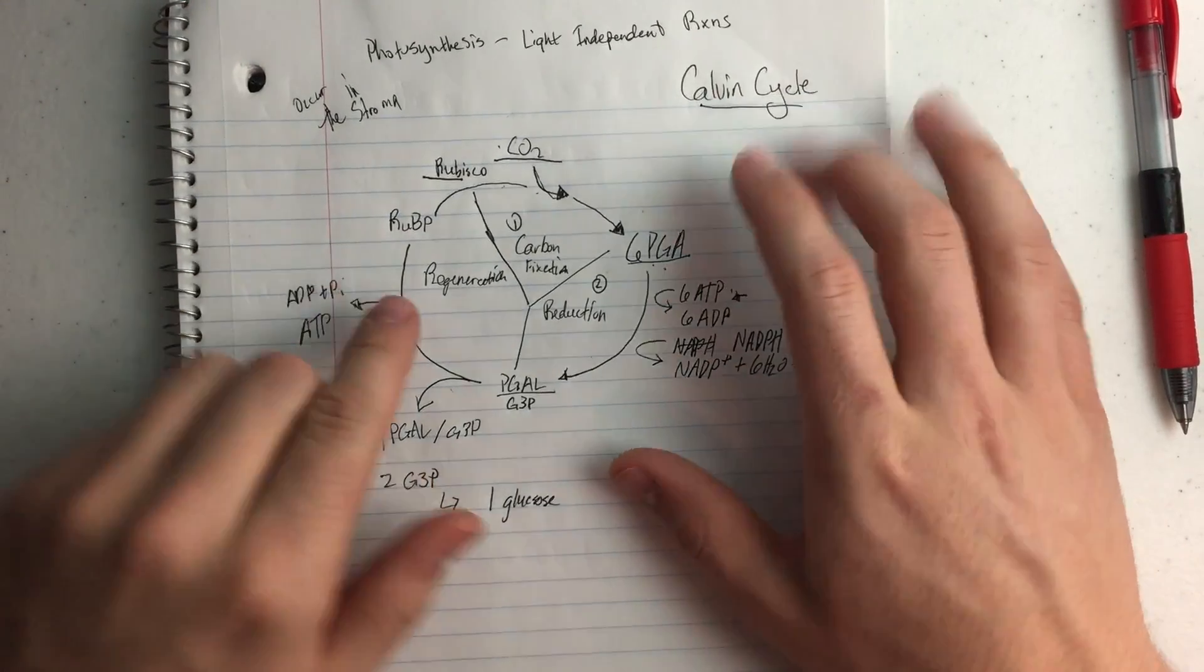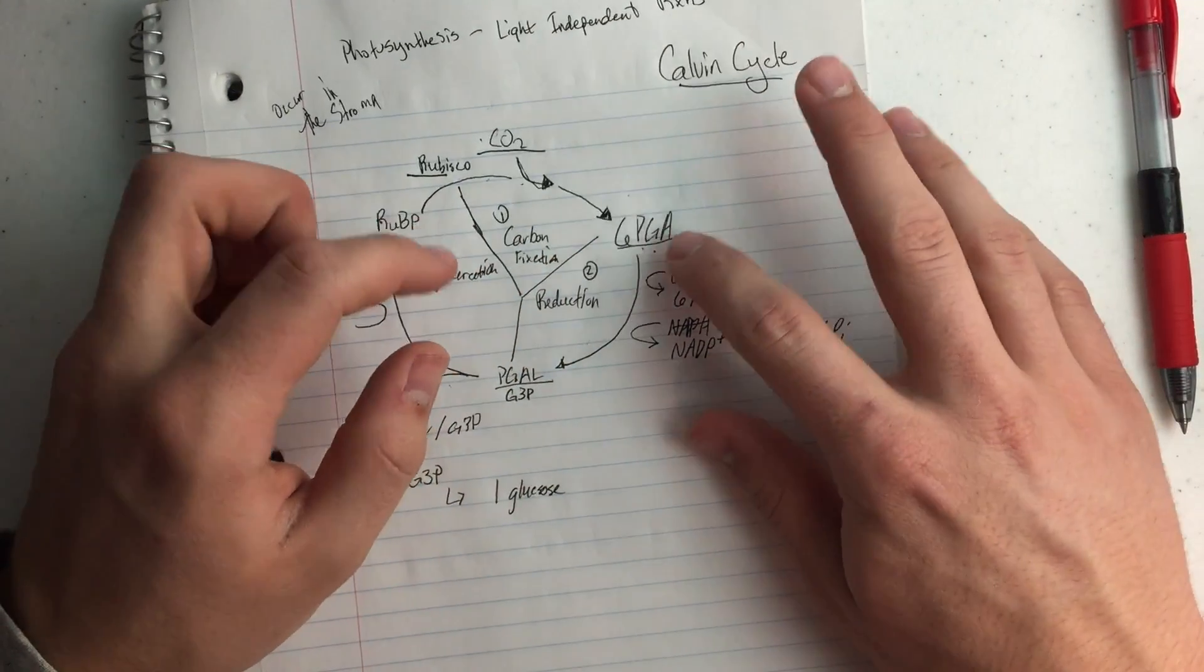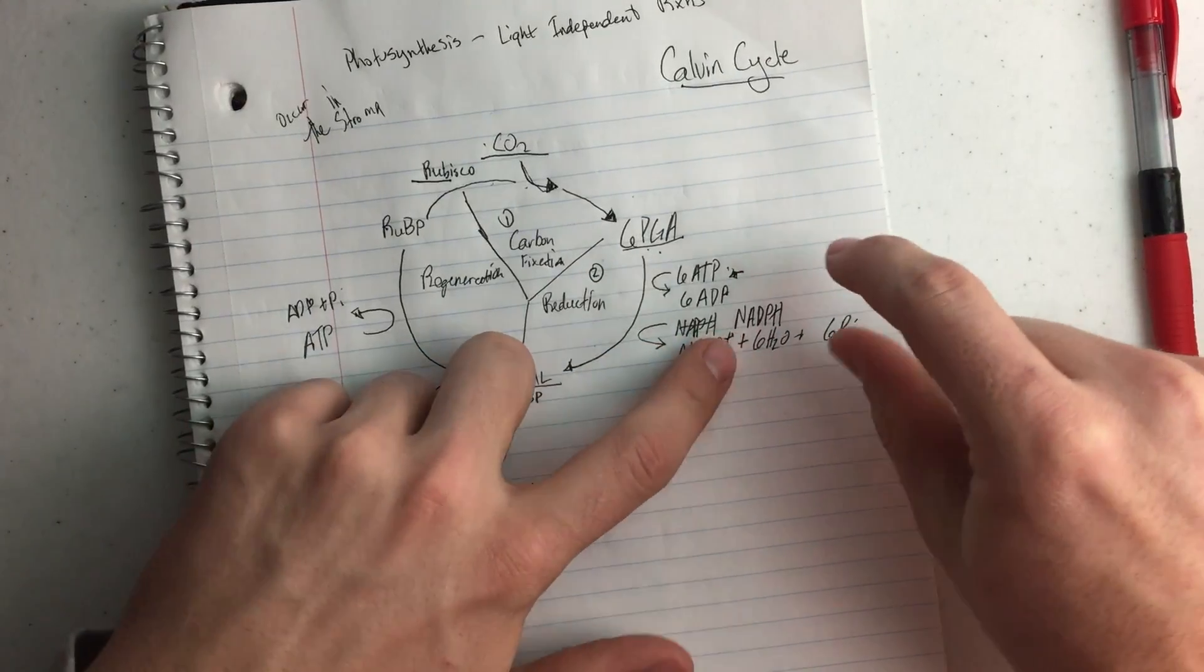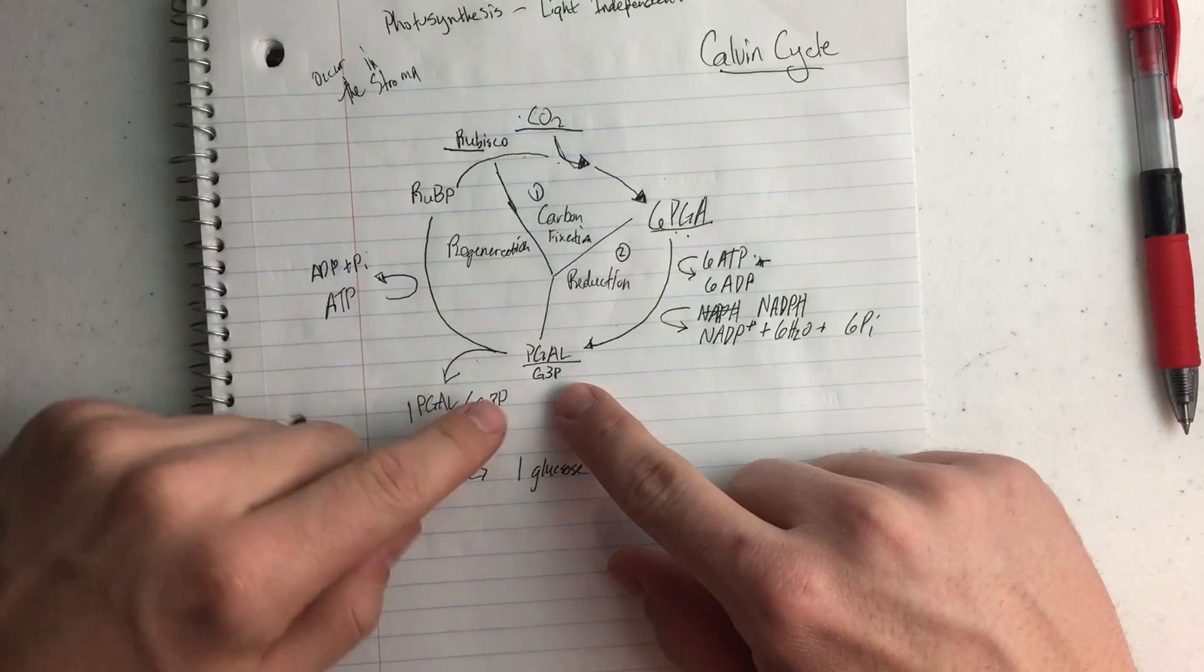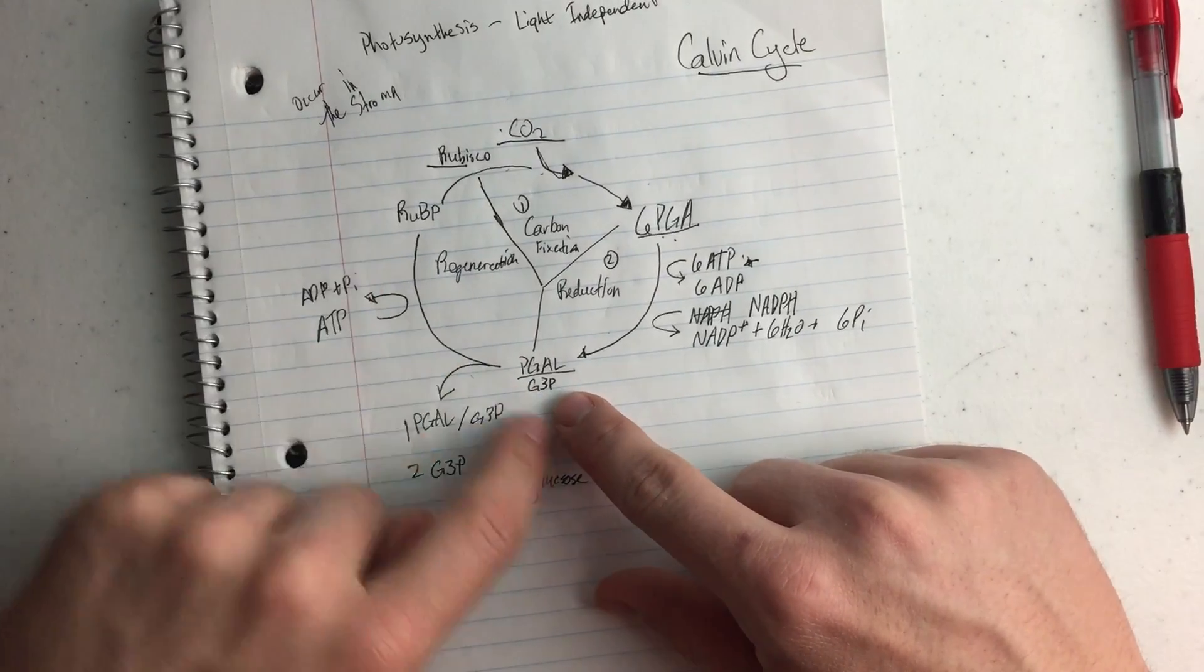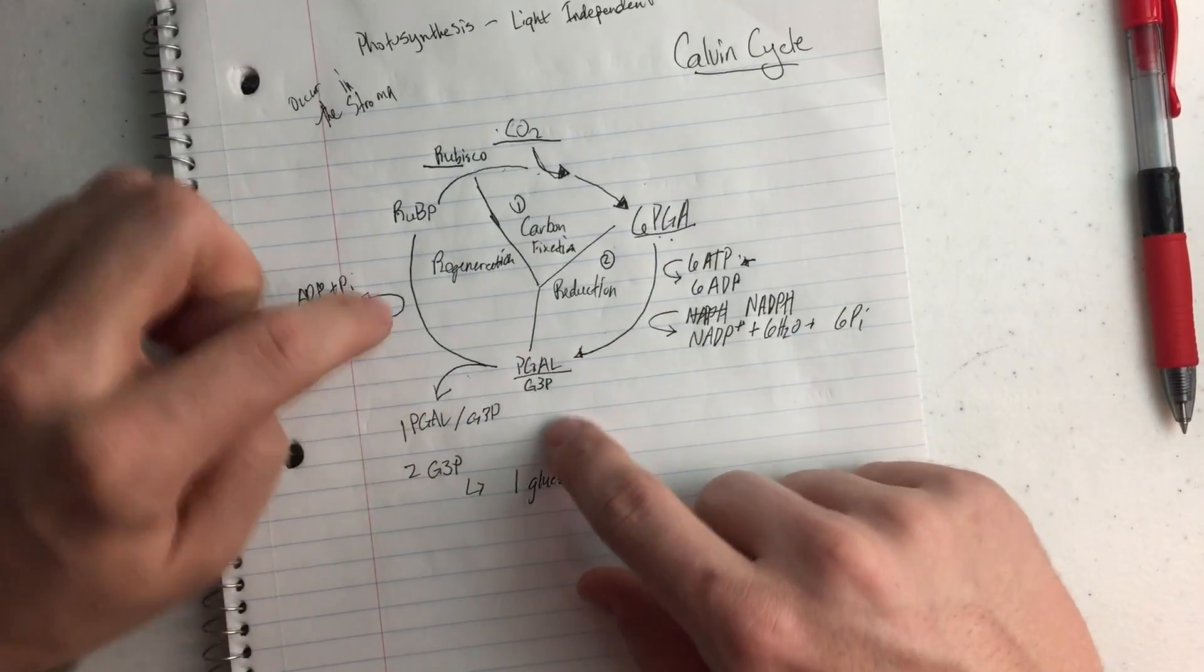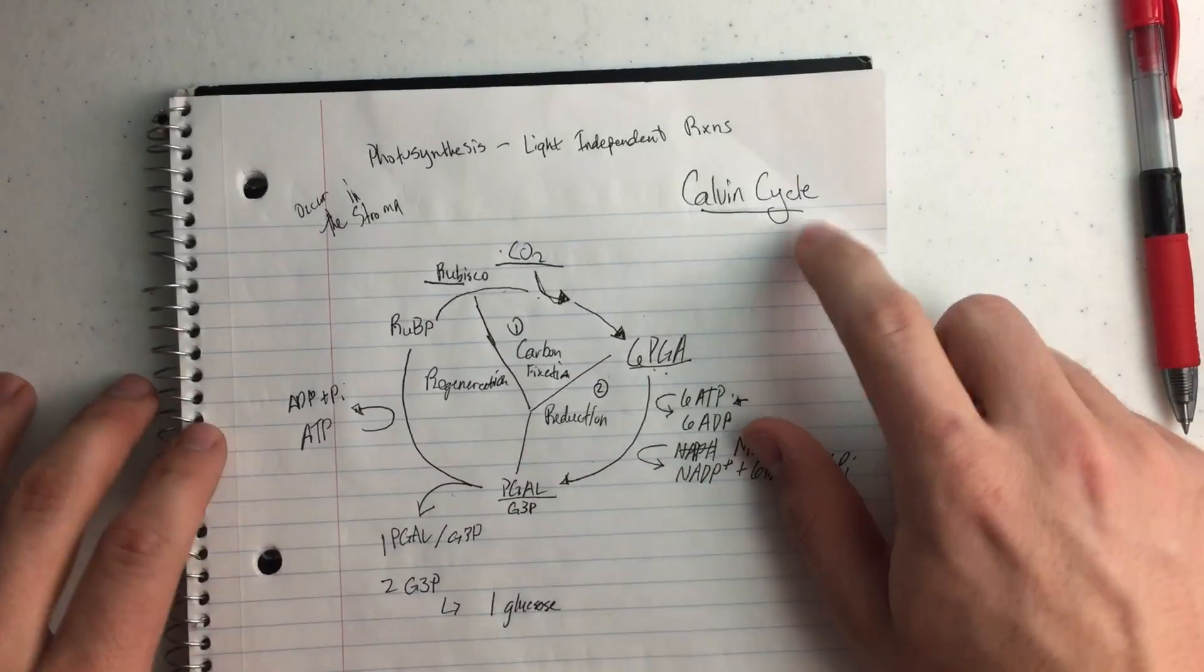So later I'll be talking about that, but in general, we take RUBPH and CO2, turn that into PGA, which then by putting in 6 ATP and 6 NADPH, we're going to get G3P or PGAL. And then by adding another ATP, we get back to RUBPH, but we lost 1 PGAL, and because we lost 1 PGAL, we need to put in more CO2. That's about what's happening in the Calvin cycle.